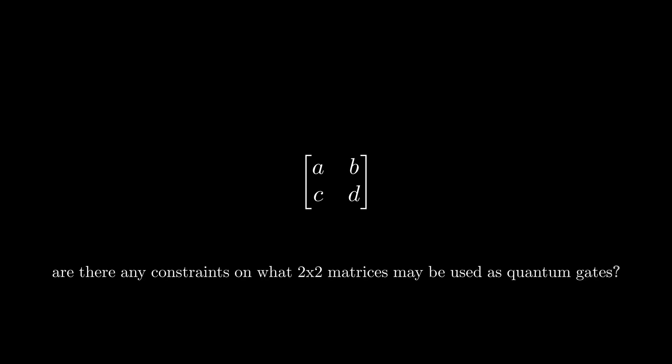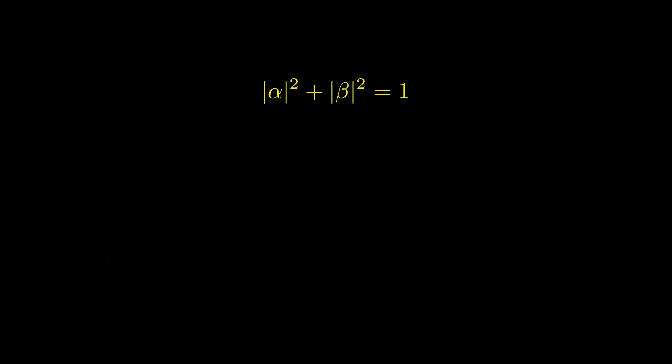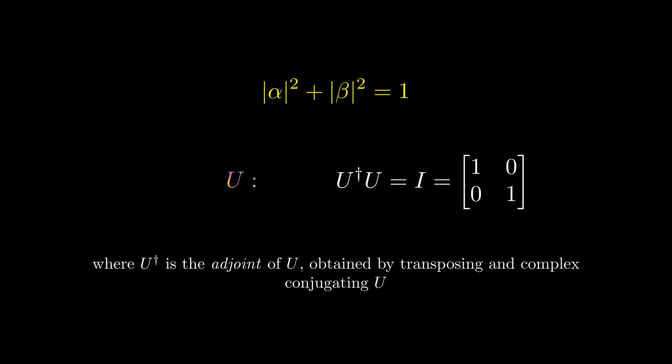This raises the question of whether any two-by-two matrix can represent a quantum gate. Recall the normalization condition where the coefficients in front of 0 and 1 squared must equal 1. The resultant transformed state vector with its new coefficients must also satisfy this condition. Turns out that matrices that are unitary preserve this condition when implemented as a transformation. Unitary matrices are matrices that when multiplied by their complex transpose give the identity matrix. This unitary constraint is actually the only constraint on a quantum gate.